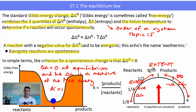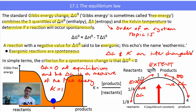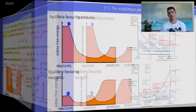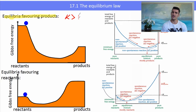There is a relationship between delta G and K — the two are actually interchangeable, and there is an equation in the data book that links them. Now we need to talk about the two types of equilibrium reaction. The first is equilibrium favoring the products, where the K value would be greater than one, which means that the Gibbs free energy must be negative.